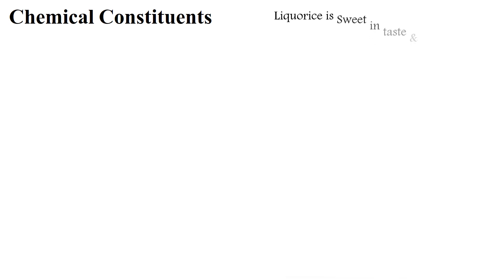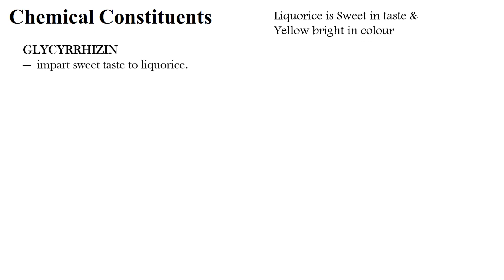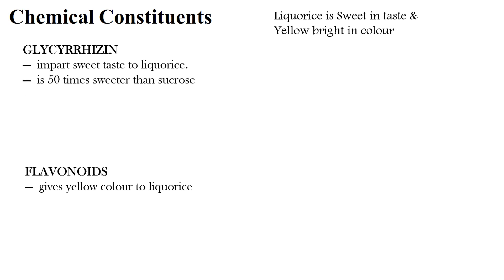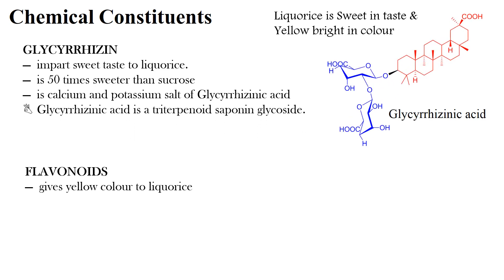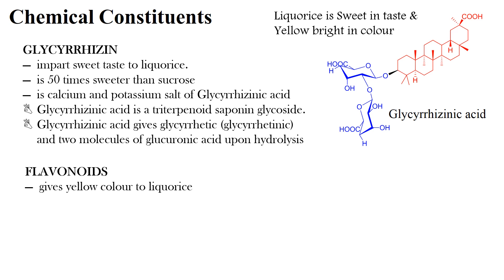Chemical constituents: liquirice is sweet in taste and bright yellow in color. Glycyrrhizin imparts sweet taste to liquirice, while flavonoids give yellow color. Glycyrrhizin is 50 times sweeter than sucrose. It is the calcium and potassium salt of glycyrrhizinic acid and is a terpenoid sapogenin glycoside. On hydrolysis, glycyrrhizin yields glycyrrhizinic acid and two molecules of glucuronic acid.